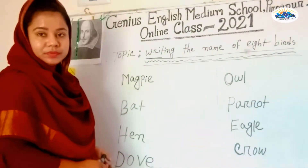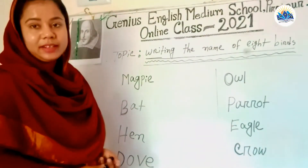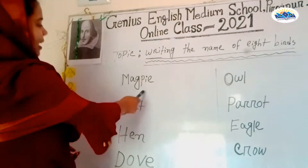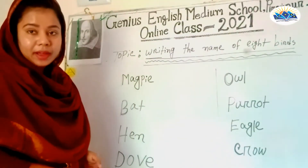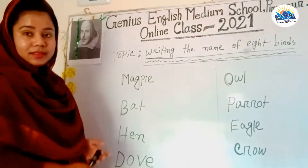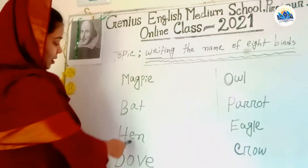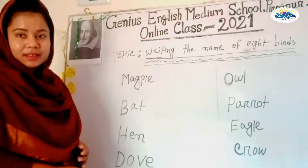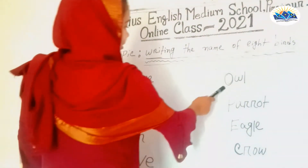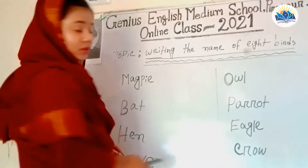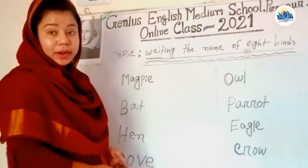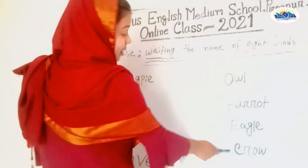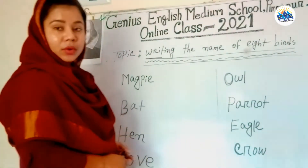Children, understand — this is magpie, this is bat, this is hen, this is dove, this is owl, this is parrot, this is eagle, this is crow.